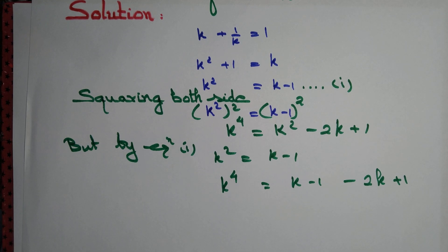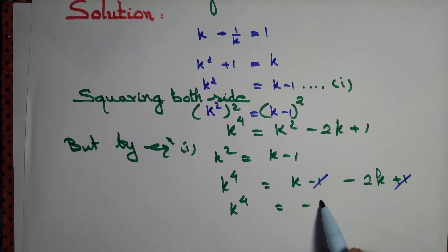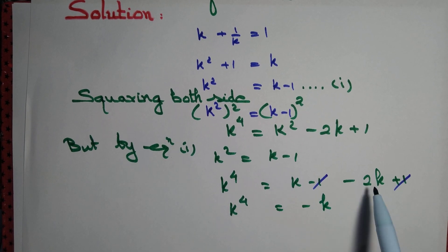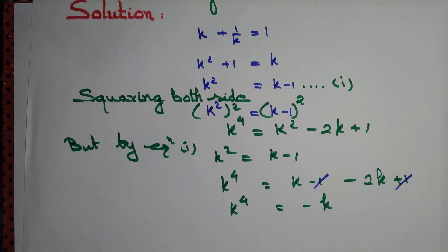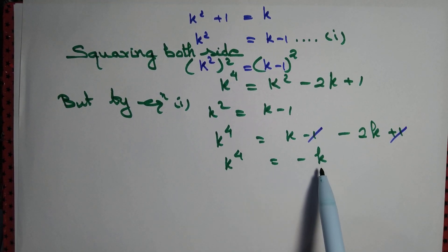Wow, plus 1 and minus 1 get cancelled. So we are left with k⁴ equal to minus k. One k minus two k gives us minus k. So we got k⁴ equal to minus k.